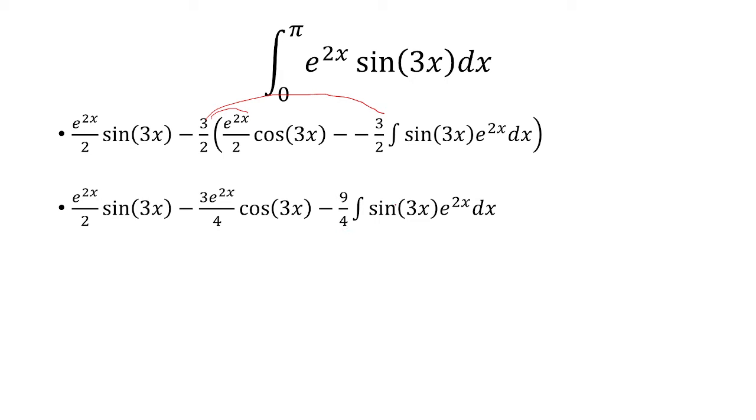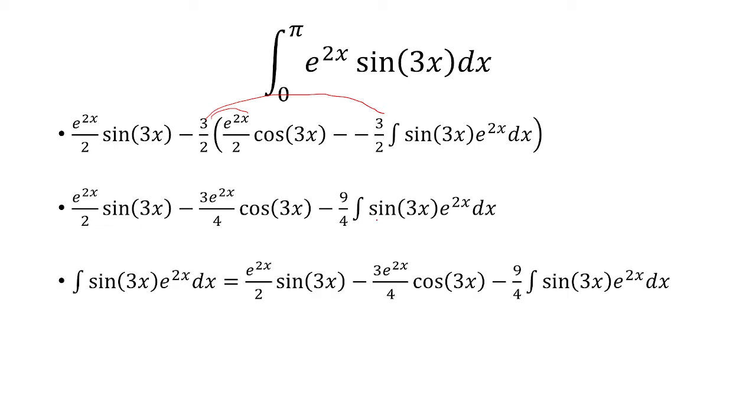Now let's keep this in mind. What we're solving for here is the integral of the original problem. So integration by parts is just rewriting the integral. So these two are equal, and notice that this is 1 integral sine 3x e to 2x dx, but this is negative 9 fourths times the same integral. So we're going to add both sides by 9 fourths times that integral.